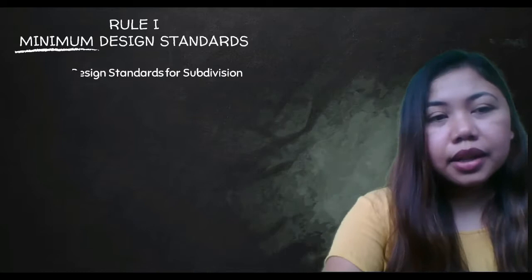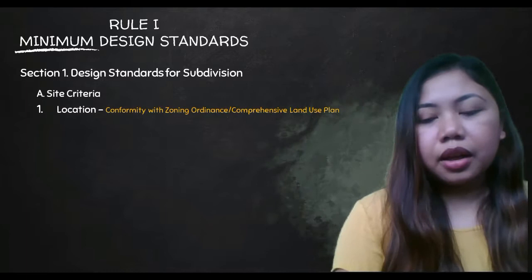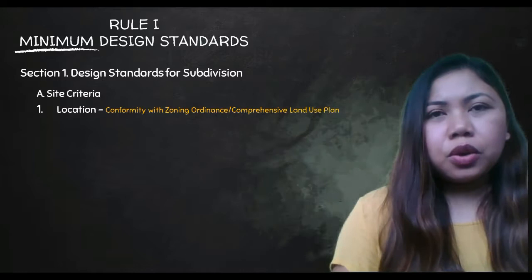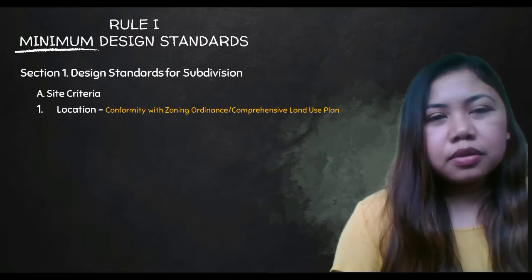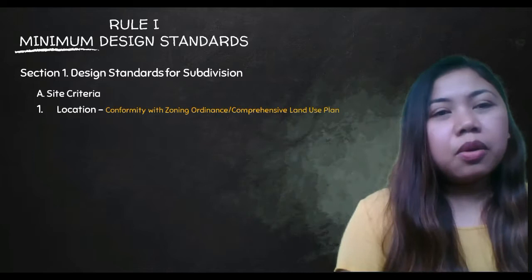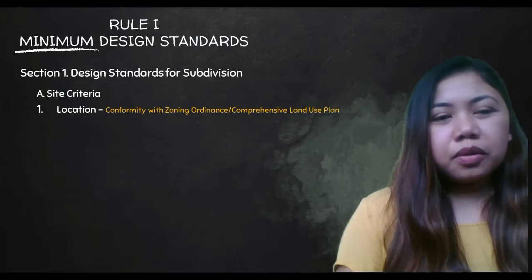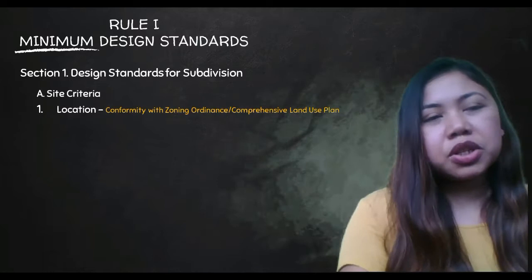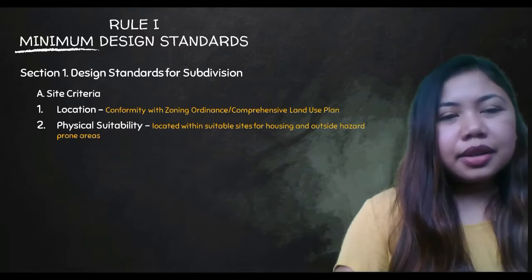Still under Section 1 — Design Standards, Site Criteria. First is location: conformity with the zoning ordinance or the comprehensive land use plan. If you want to buy a subdivision lot, check the zoning of the location. To verify a subdivision is legitimate, check whether it is classified in a residential zone.